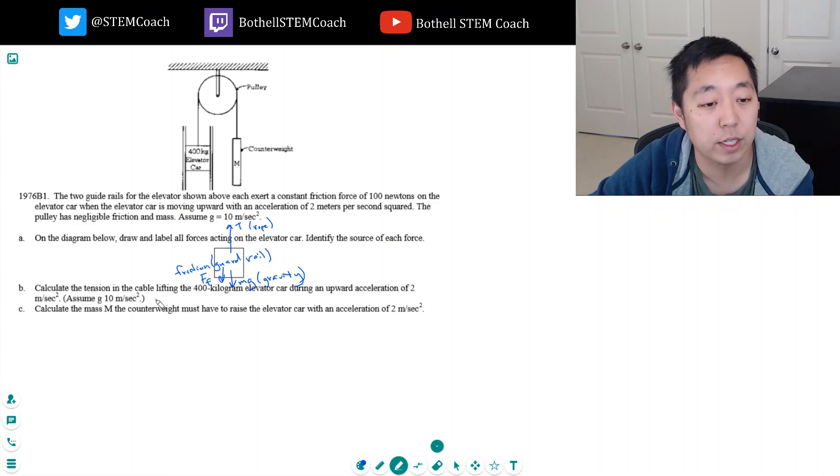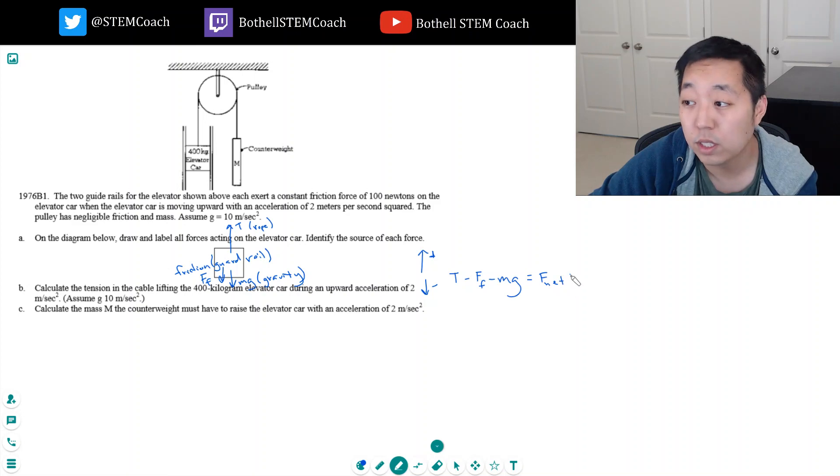Calculate the tension in the cable lifting the 400 kilogram elevator with an upward acceleration of 2 meters per second squared. Okay, net force equations - we'll say upward is positive and downward is negative. So T minus force of friction minus mg is my net force, and that has to equal mass times acceleration. I want to calculate the tension, so T is equal to ma plus mg plus the force of friction.